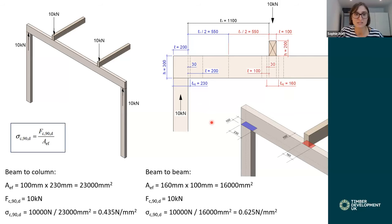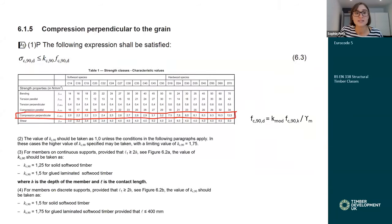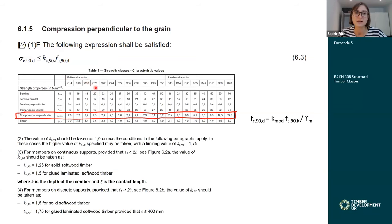The Eurocode defines L1 through two diagrams. The left shows a timber with continuous support — for example, a sole plate bearing continuously onto a concrete slab, where L1 is the clear distance between studs. The other situation is a timber member on a discrete support — like a beam bearing onto a column — where L1 is from the face of the column to the face of the applied loading. In a simple example with secondary beams bearing on a primary beam, the effective bearing length at the column location increases from 200mm to 230mm, and at the beam-to-beam location from 100mm to 160mm — a real benefit.